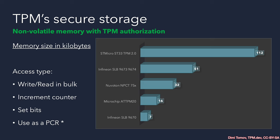Another access type is to use the NVRAM as a counter. This is a very powerful tool because the only way to change the data is to use a dedicated TPM command that can only increment the counter by one at a time. Also powerful is to set separate bits using a bitwise OR operation. In this lecture we'll cover writing and reading in bulk and the use of NV counters.